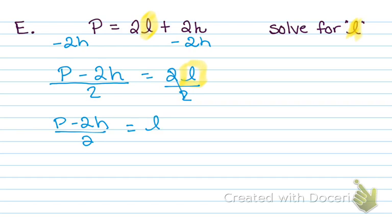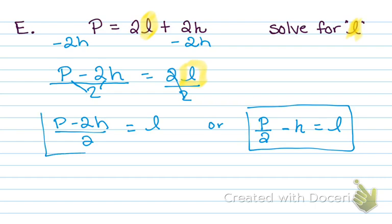Or I can think about each piece being divided separately — P divided by 2, and negative 2H divided by 2. So that gives me P divided by 2, and then minus — well, 2 divided by 2 is 1, so I just have minus H equals L. These are both the exact same value, exact same answer — they just look a little bit different.